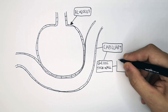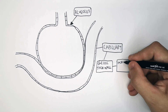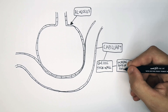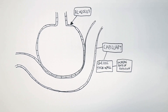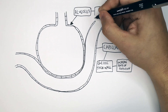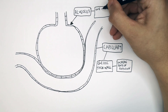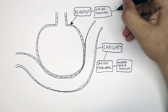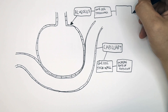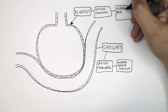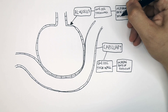Therefore, there's a one-cell-thick wall to increase the rate of diffusion in the capillary and also in the alveolus. In the alveolus, there is also a one-cell-thick wall, and that is also to increase the rate of diffusion of gases.